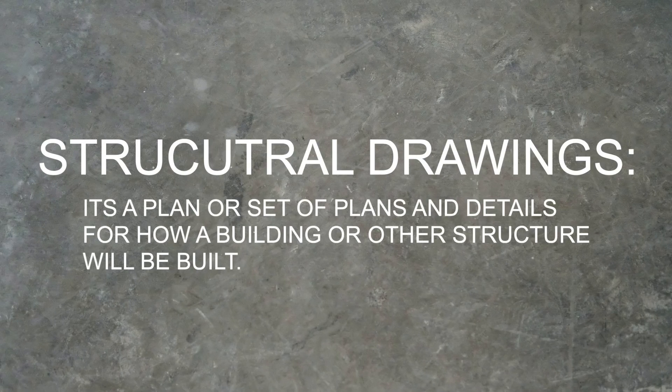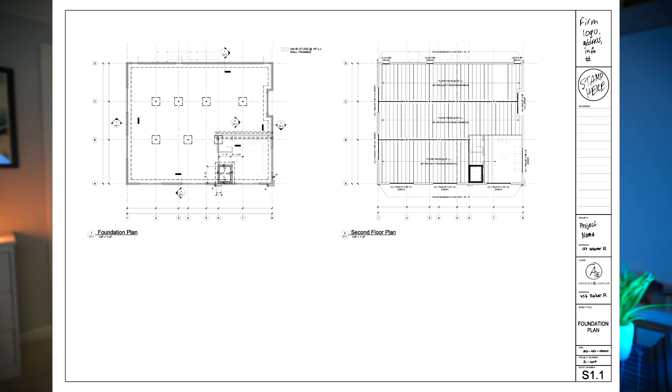Timestamps are provided below if you want to skip around. So, what are structural drawings? It's a plan or set of plans and details for how a building or other structure will be built. That's why it's important to always have a PE — a professional engineer — stamp their name onto a set of drawings, because that's proof that these drawings will work and that it's safe to use.